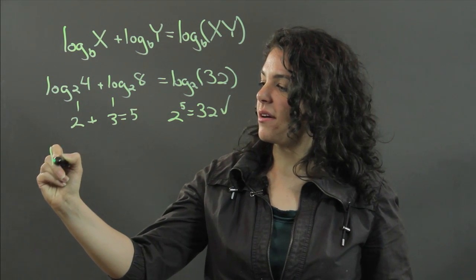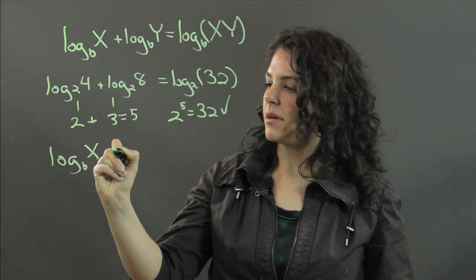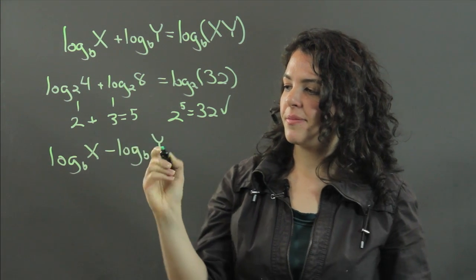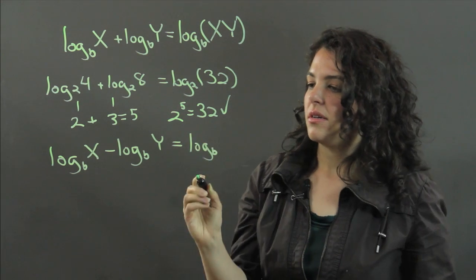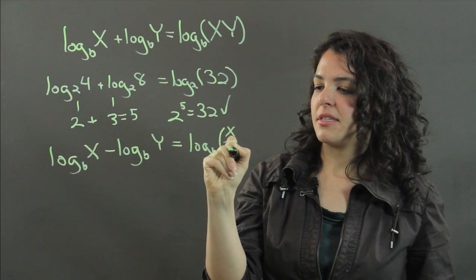Now for the differences, if you have log some base x minus log of some base y, you can then write them as log base b of the quotient of x and y.